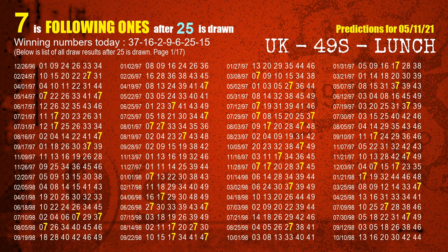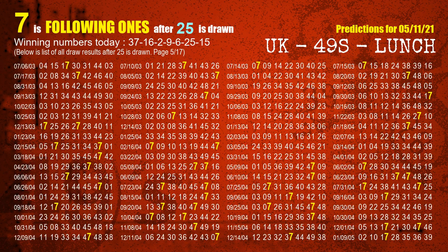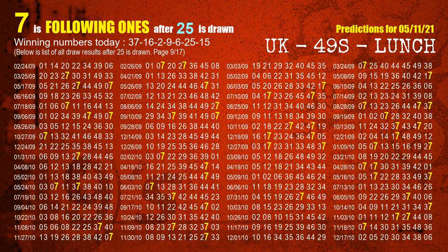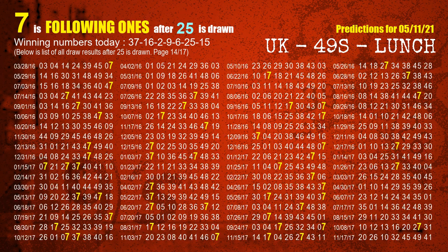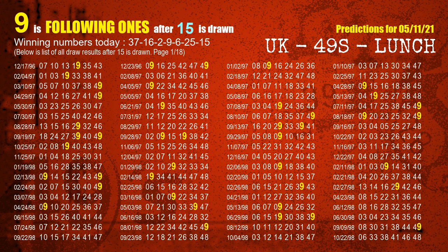The sixth winning number is 25. The most frequently following units digit is 7 when 25 is the winning number in the last draw. The booster winning number is 15. The most frequently following units digit is 9 when 15 is the winning number in the last draw.